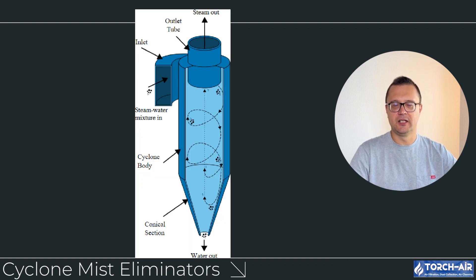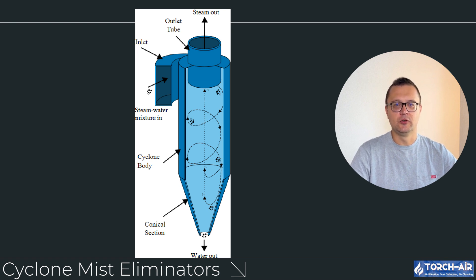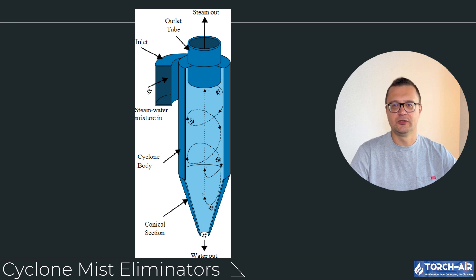Cyclone mist eliminators use centrifugal force to separate droplets from the gas stream. The gas enters the cyclone at high speed, causing it to spin. This spinning motion pushes the heavier liquid droplets to the outer walls, where they are collected and drained away. Best for high liquid loads and larger droplet sizes, cyclones are great for handling high flow rates and are relatively maintenance-free since they have no moving parts. However, they are less effective at capturing very fine mist, so they are often used as a pre-filter before more precise mist eliminators like mesh pads.